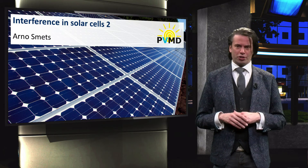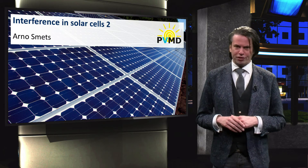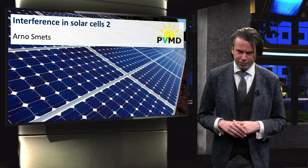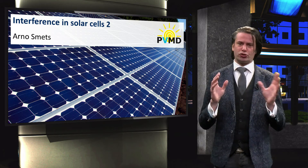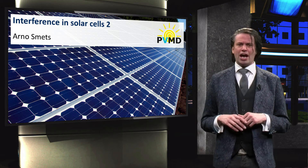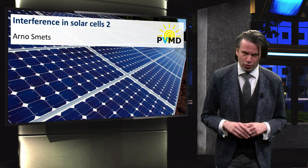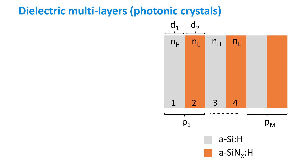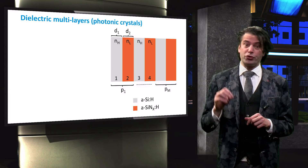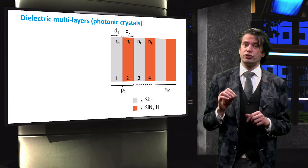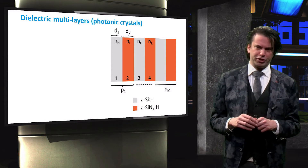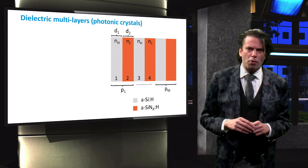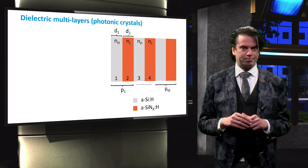Let's continue our discussion of interference in thin films. We discussed how the concept of destructive interference is used for anti-reflection coatings. Not only destructive interference finds use in solar cells — photonic crystals use constructive as well as destructive interference to form an effective backreflector.